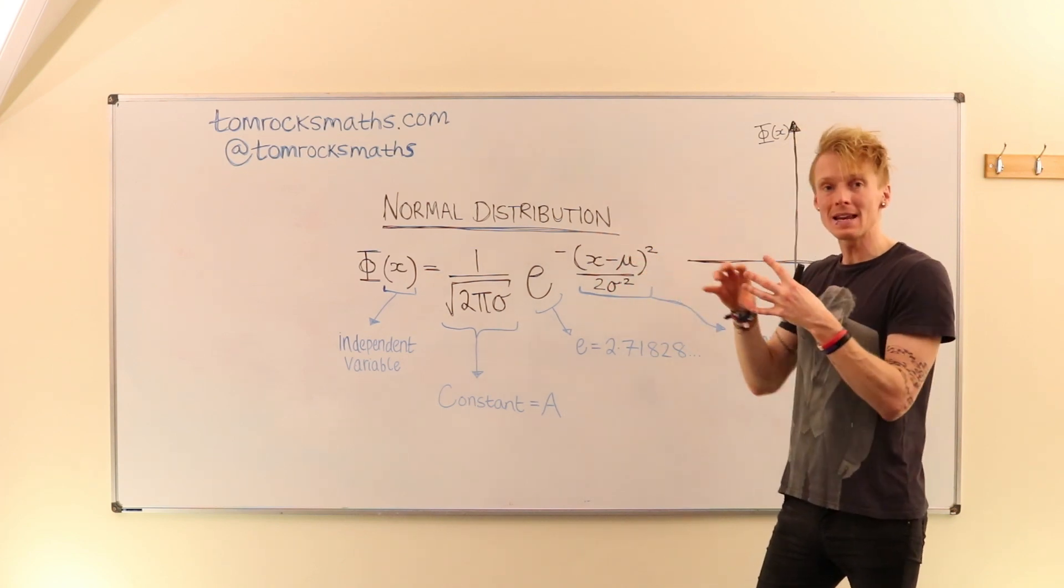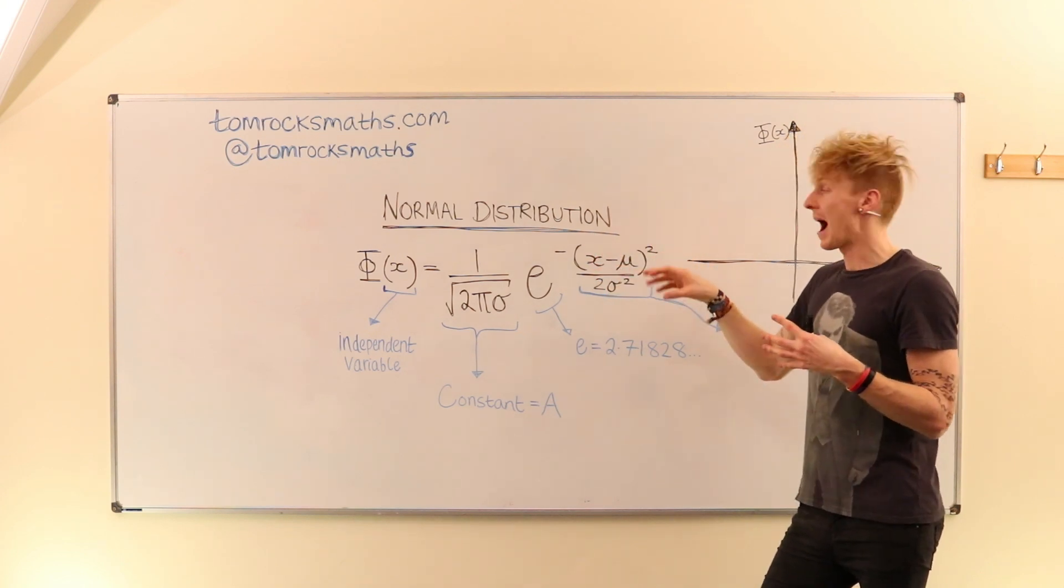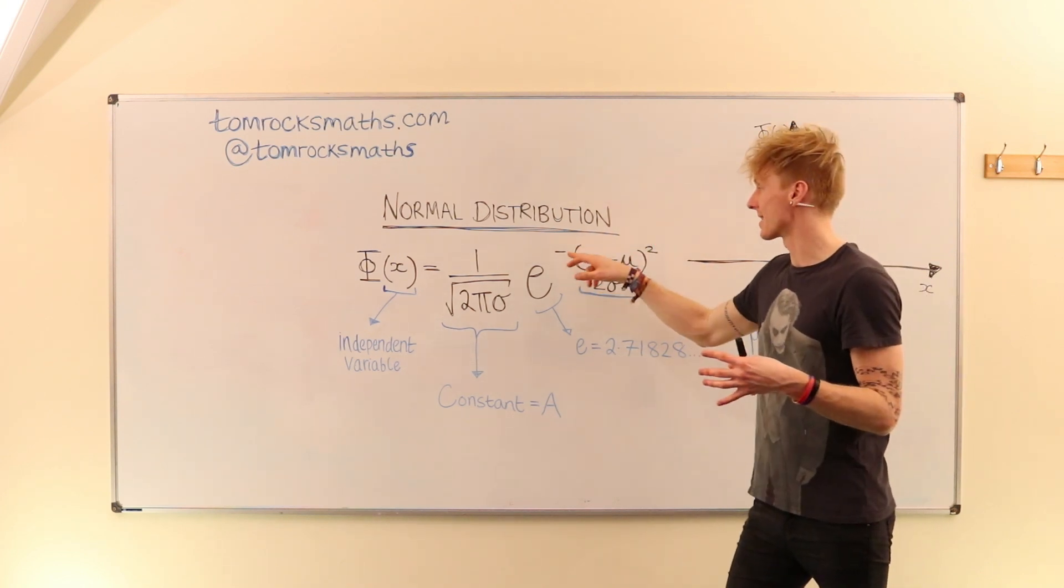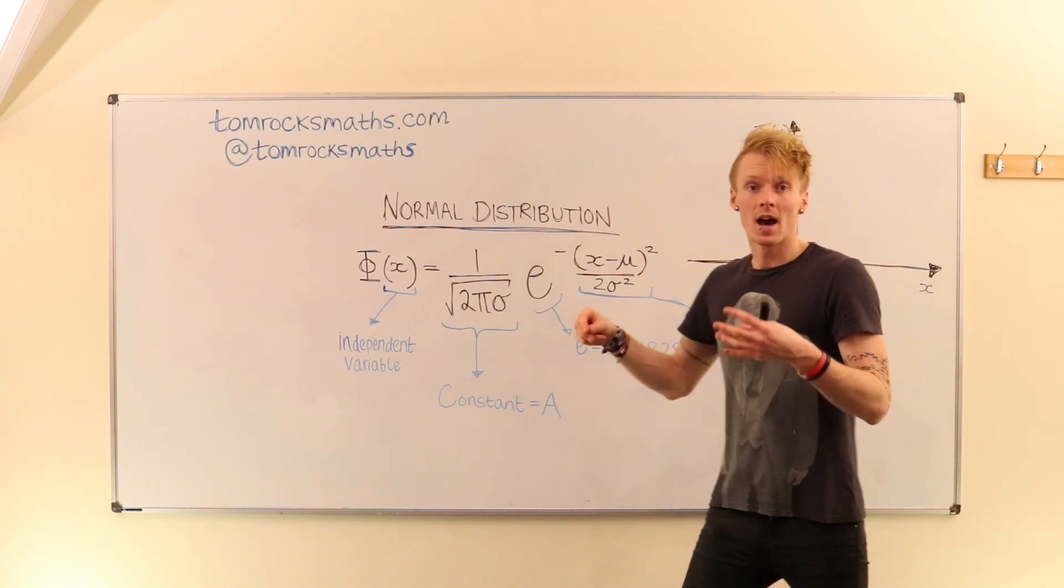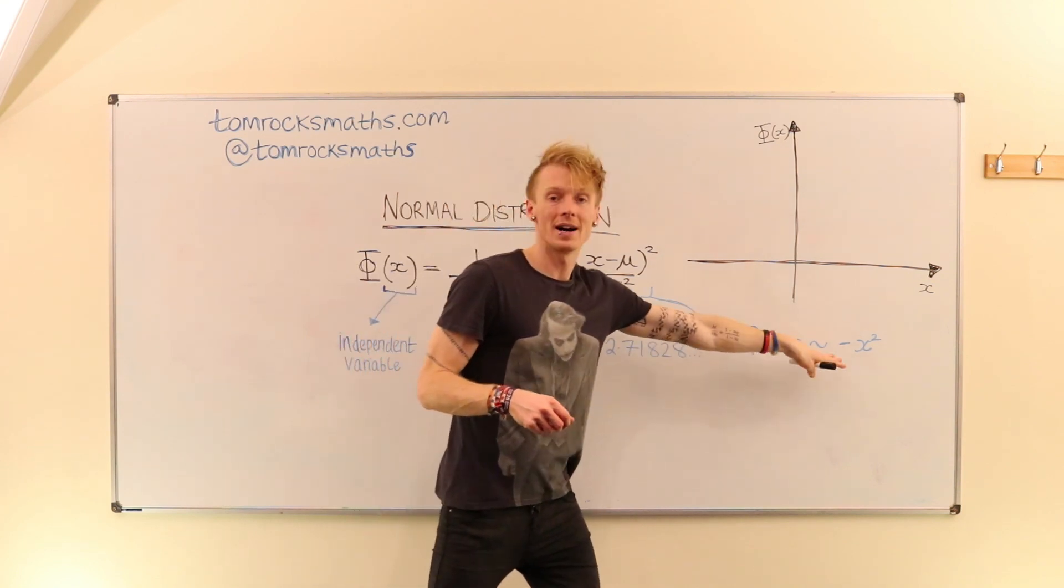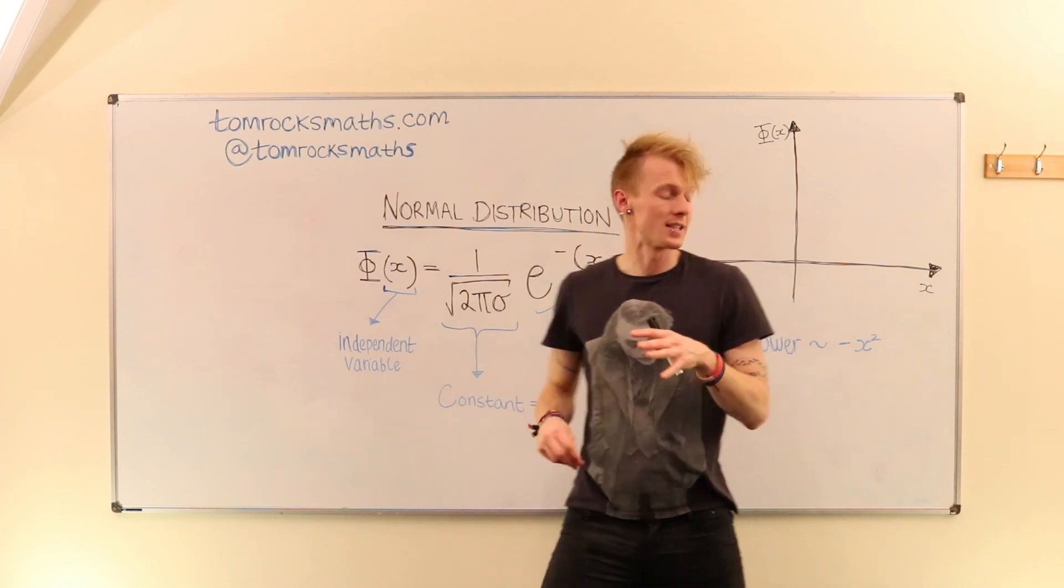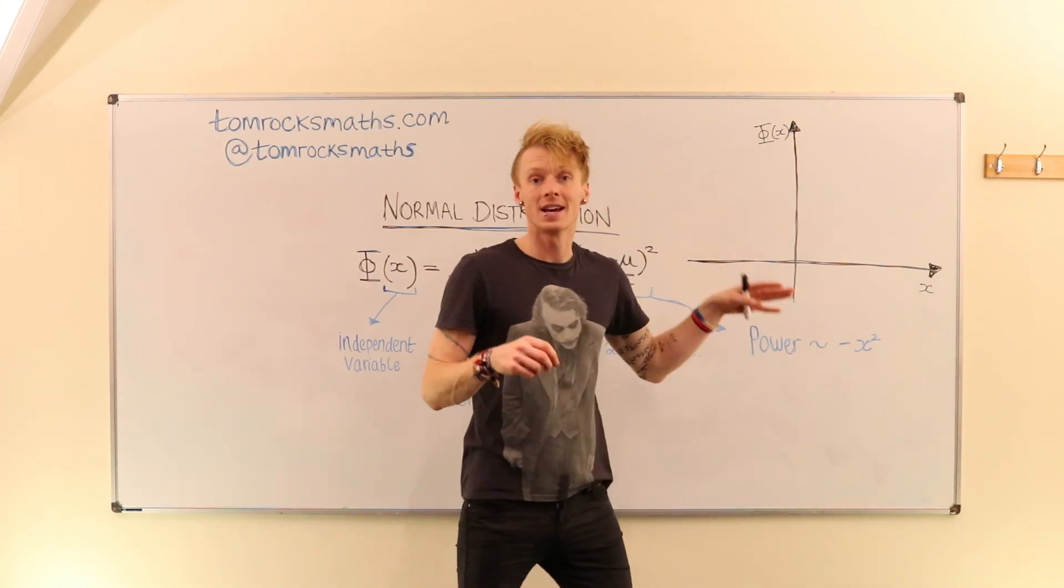And we can see that the main behaviour is going to be dominated by x squared. And importantly, we have a minus sign in front of this. And so this whole term basically looks like e to the power minus x squared. So we have a constant times e to the minus x squared.